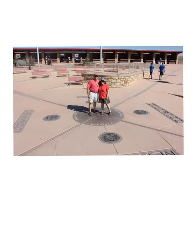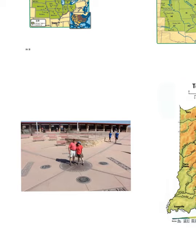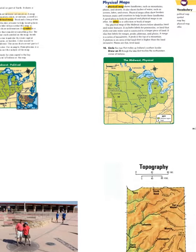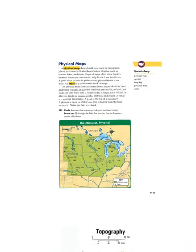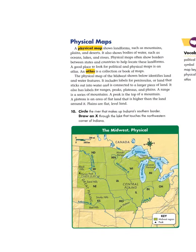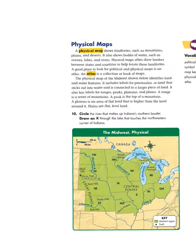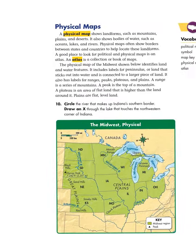So, political maps show us political boundaries and political things. We also have something called a physical map. A physical map shows us physical features.